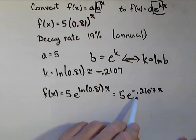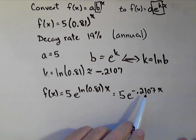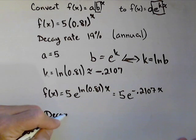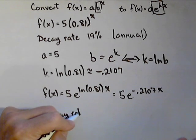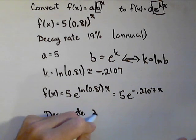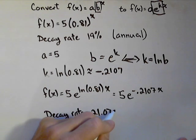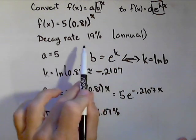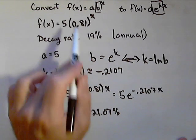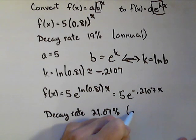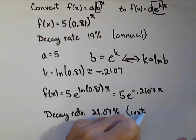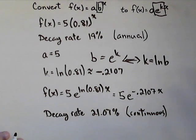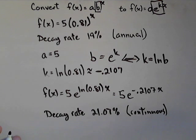We will lose a little bit of accuracy with the approximation. We still have a decay rate, and we know it because it's negative — 21.07%. Like we said, the 19% was our annual decay rate, or per unit change in our input. The 21.07% would be a continuous decay rate. So we get a little bit different information from each model.